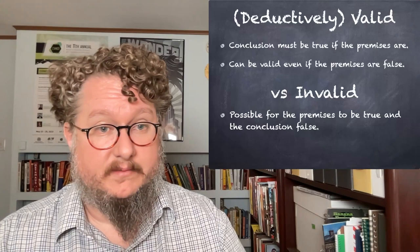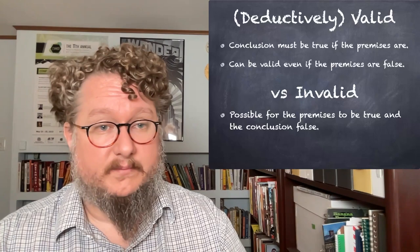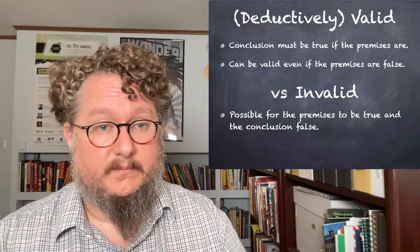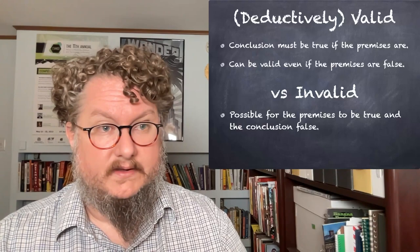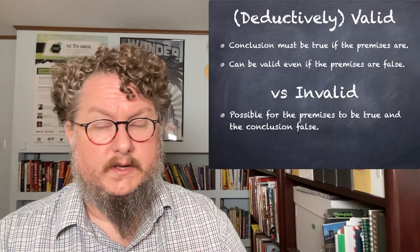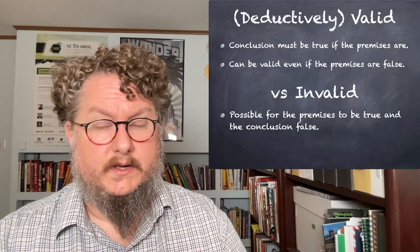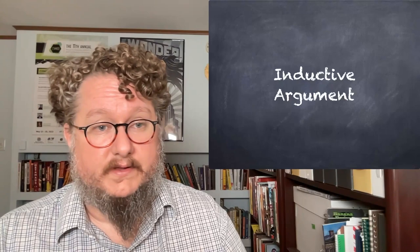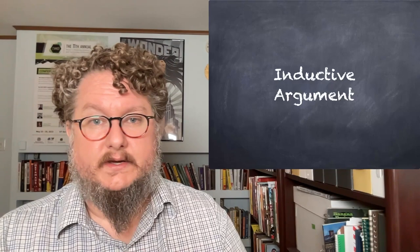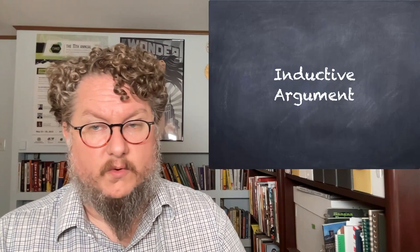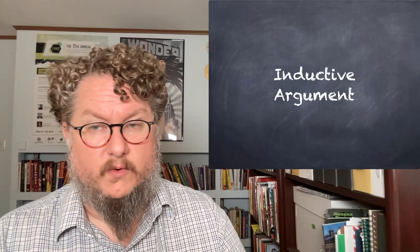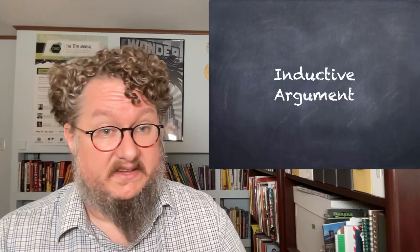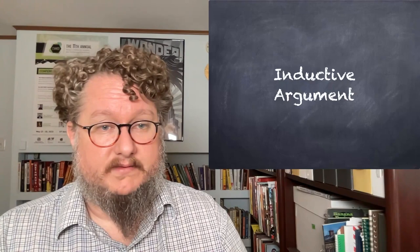It's possible that an argument has all true premises and a true conclusion but is still invalid, because it's possible that the premises could be true and the conclusion false. It's the form of the argument that tells us whether it's valid or invalid — not whether the premises or conclusion happen to be true. In contrast to deductively valid arguments, we often make inductive arguments. An inductive argument doesn't guarantee the truth of the conclusion but makes it more probable, often generalizing from premises to a more general and stronger conclusion.